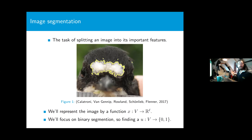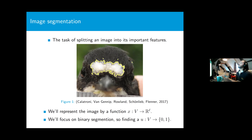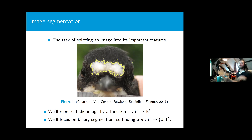First, what is segmentation? Segmentation is the task of splitting an image into its important features. We represent the image by a function sending pixels to real values, and we focus on binary segmentation — finding a function sending pixels to either zero or one. This is a learning problem where we learn a labeling of pixels, with some subset as training data, and extend labels from those training pixels onto the entire image.